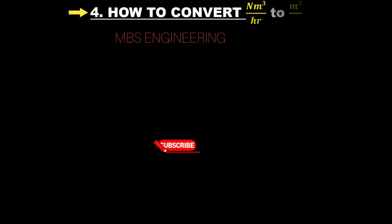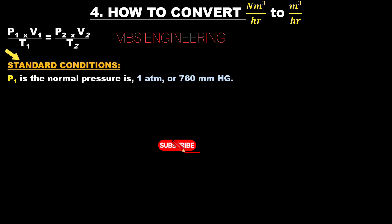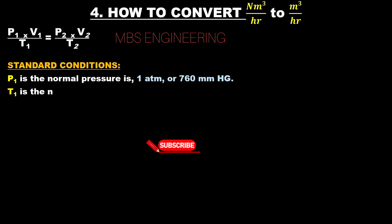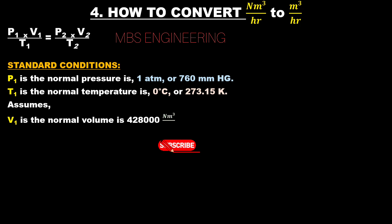We will learn how to convert Nm³/hr to m³/hr. The following ideal gas law formula is used: P1V1/T1 = P2V2/T2. The standard conditions are: P1 is the normal pressure of 1 atmospheric pressure or 760 mm of mercury; T1 is the normal temperature of 0 degrees Celsius or 273.15 Kelvin; and assume V1 is the normal volume of 4,28,000 Nm³/hr.